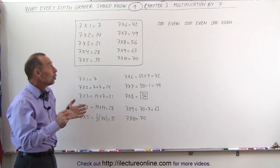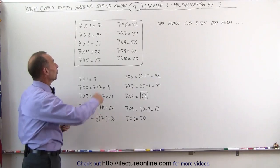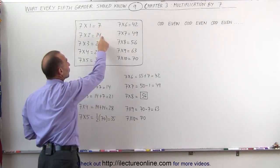One pattern I notice is that the answers are either odd or even and they alternate. The first answer is odd, the next answer is even, and this pattern continues throughout the table.